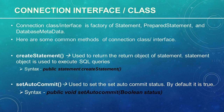The next method is setAutoCommit(). This method is used to set the autocommit status. By default, the autocommit status is true. If we set it to false, then you need to commit the transaction manually by executing the commit command. The syntax is: public void setAutoCommit(boolean status). It returns nothing since the return type is void.